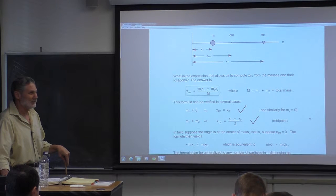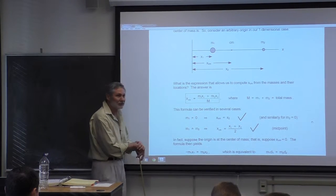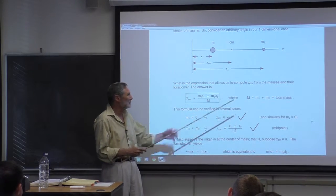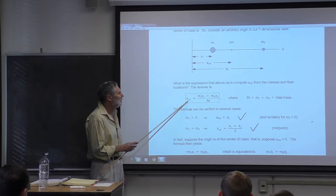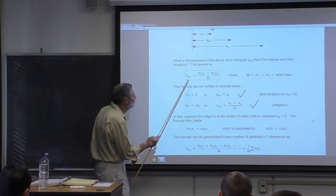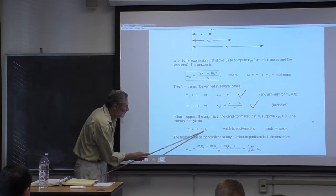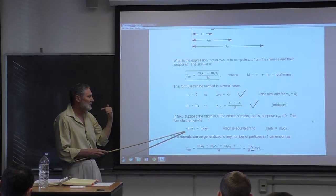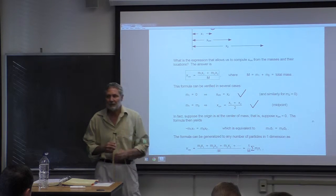That pretty much nails it down, but there's one more thing we can do. Nothing stops us from choosing our origin to be at the center of mass. In that case, x_cm equals zero, and we get the condition M1·x1 + M2·x2 = 0, which rearranges to M1·d1 = M2·d2. This is equivalent to the balance condition we described earlier. So this is the right formula.